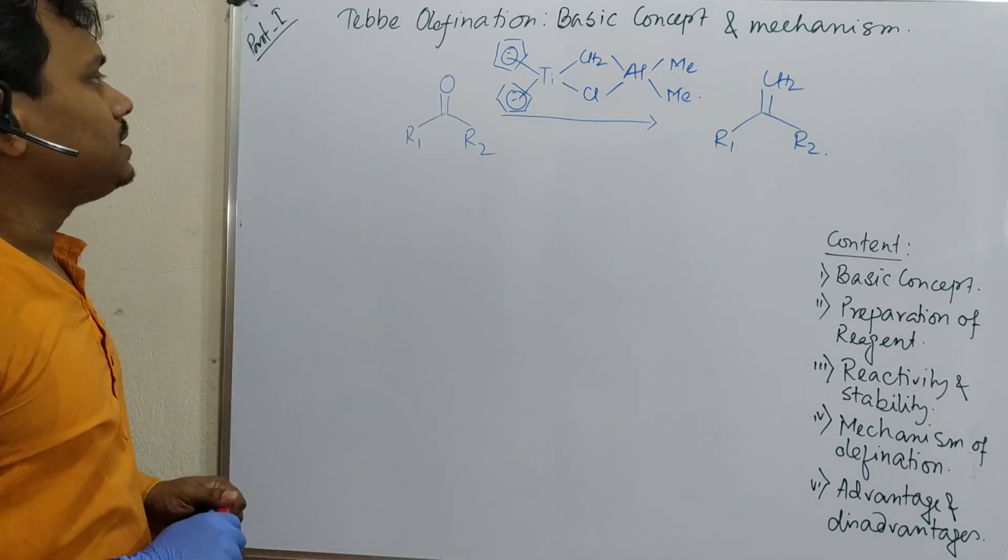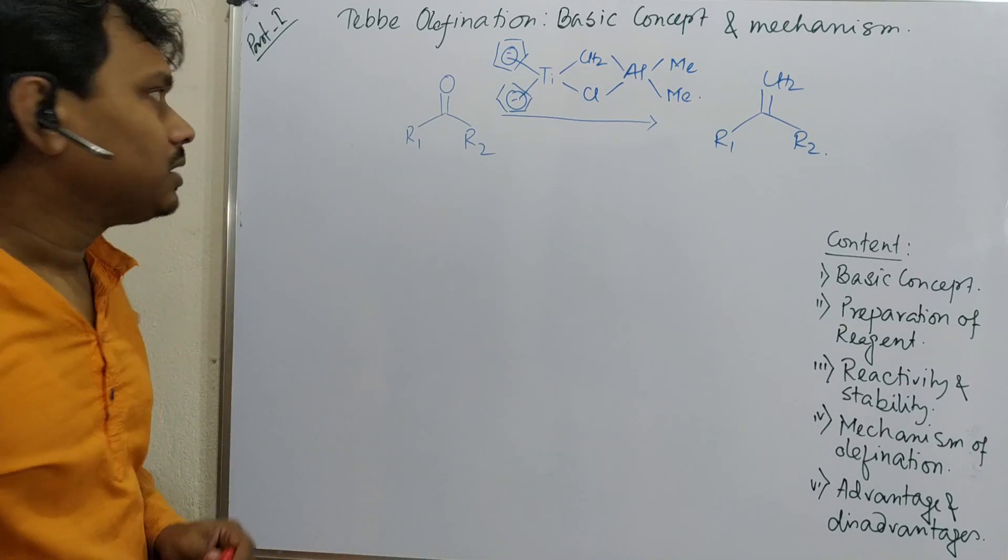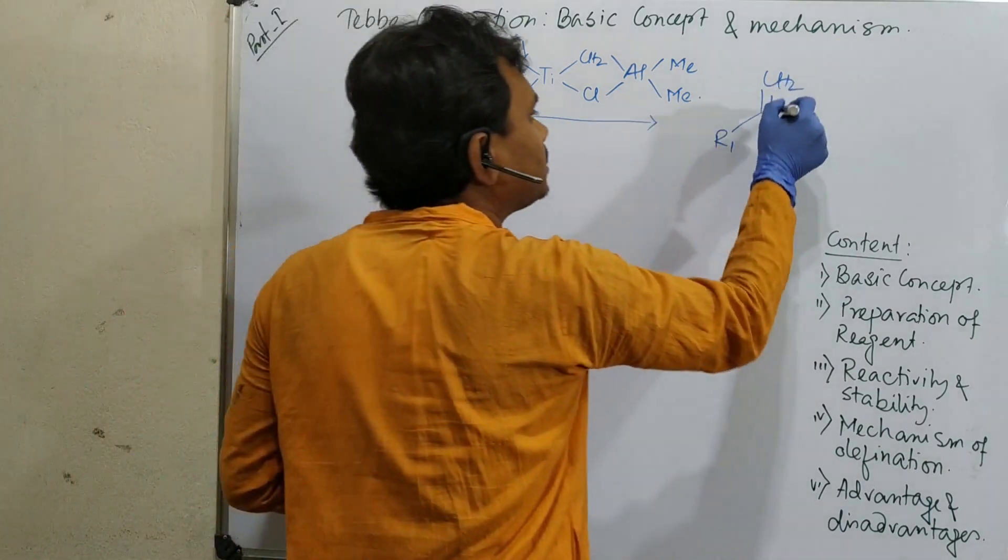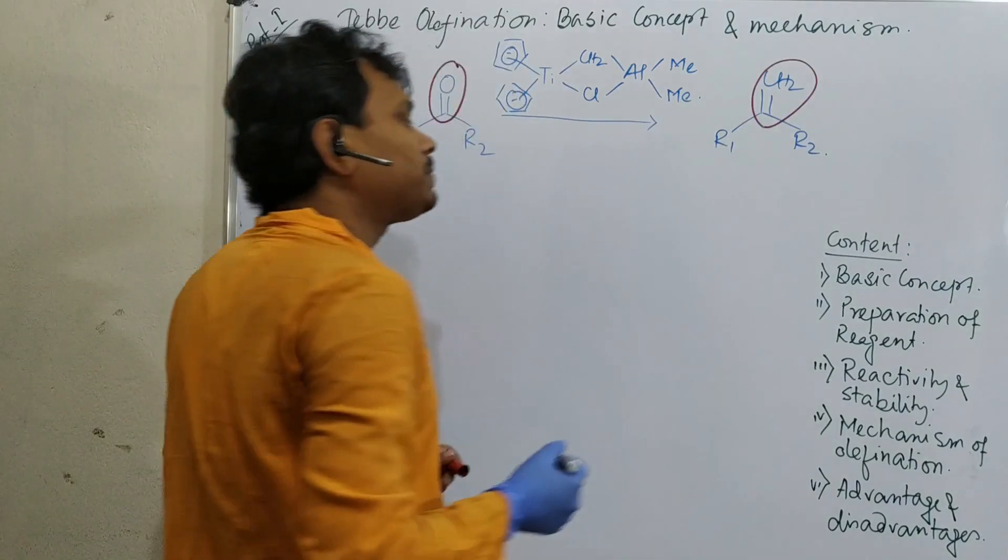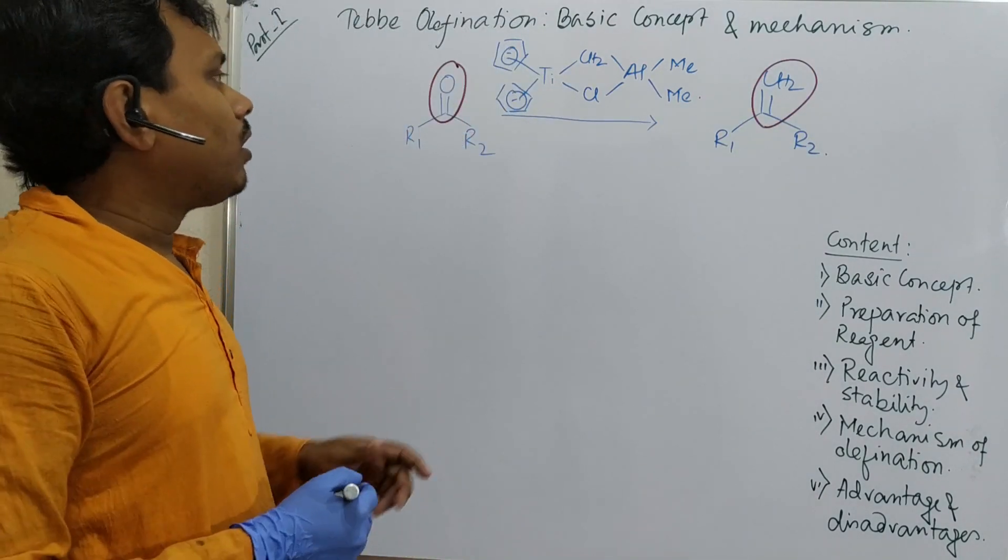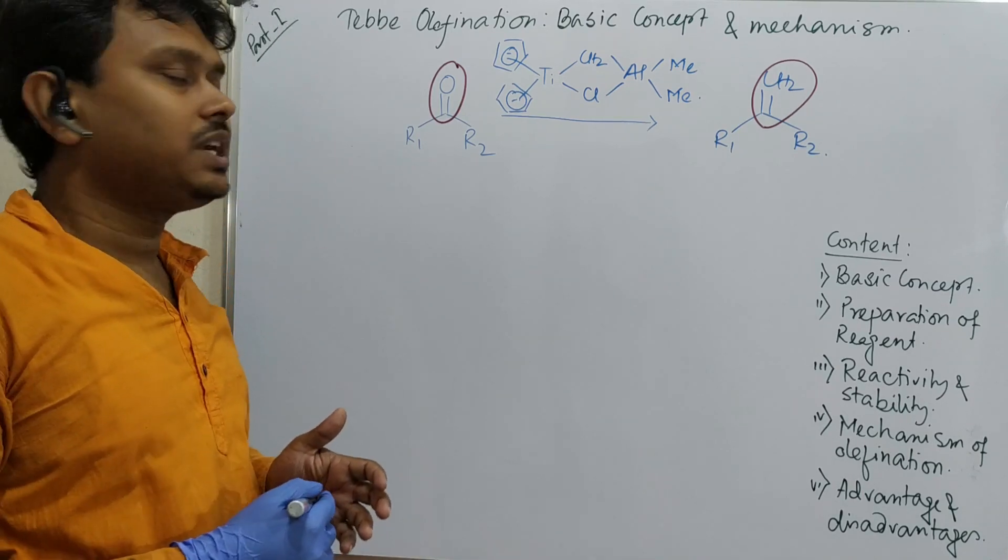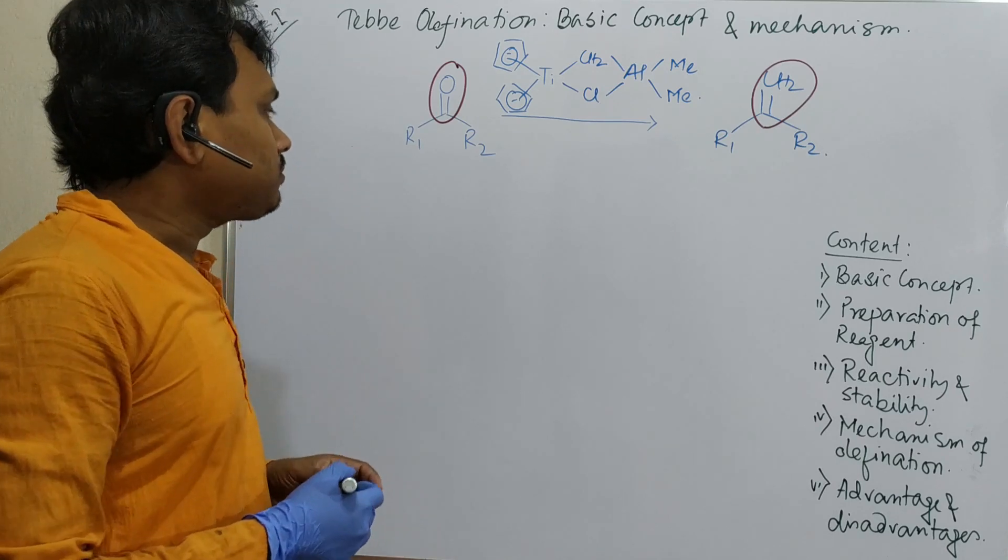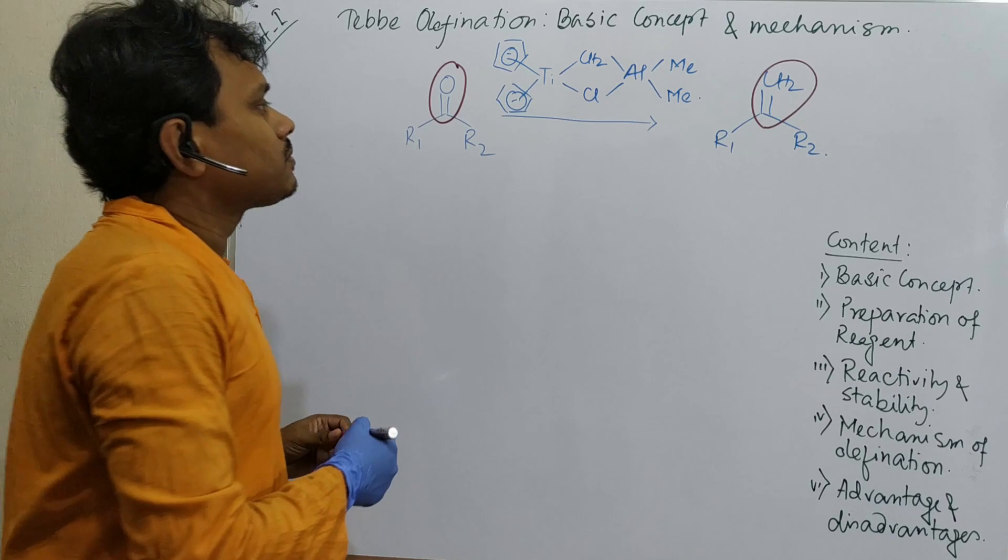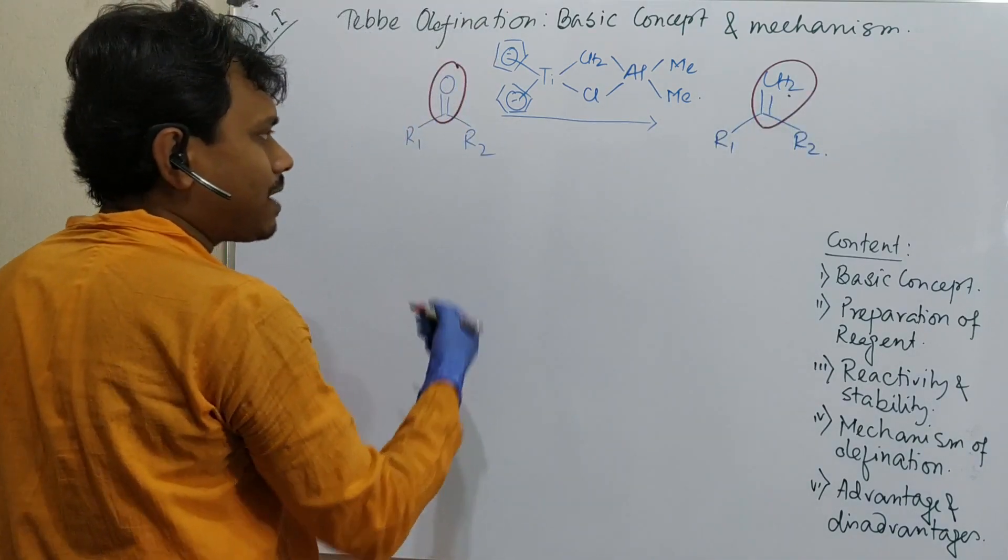As you can see, this Tebbe olefination reaction is nothing but conversion of this carbonyl group into methylene group. Similar type of observation you have already got, that is the Wittig reaction. I have already made many videos about it, please go through that if you haven't seen it.